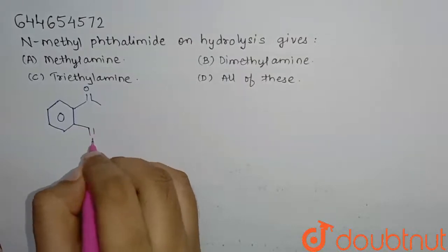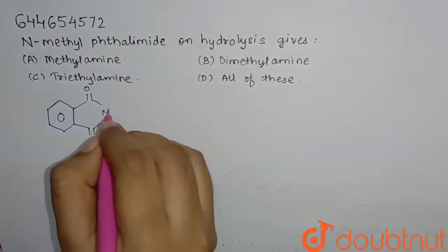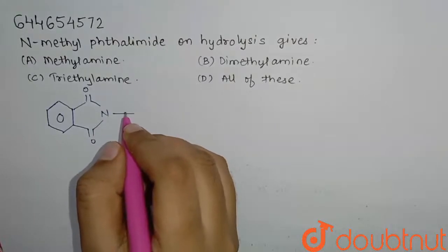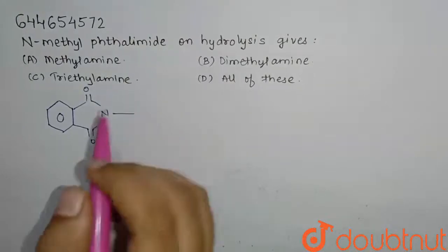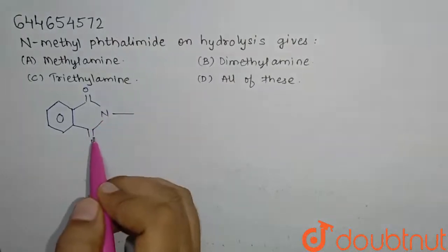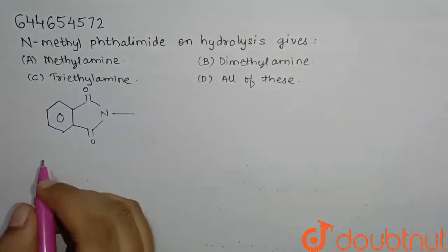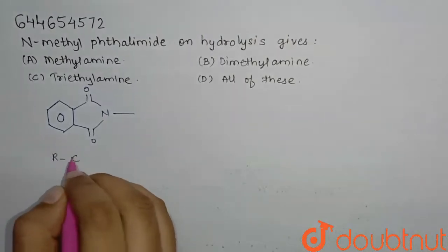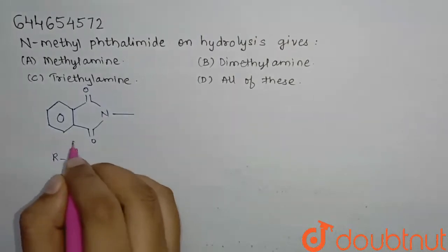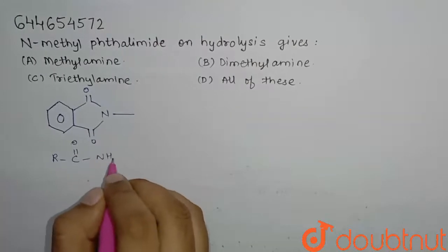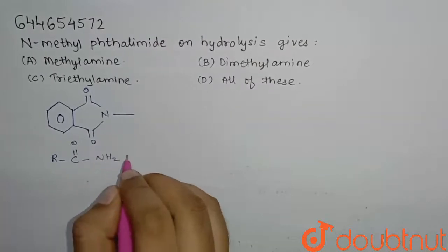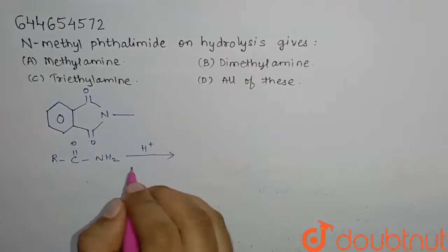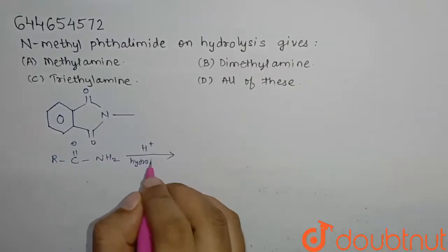This is the structure of N-methylthylamide, with a methyl group CH3. Here they are asking for hydrolysis. So if we see the general reaction, that is R-C double bond O and NH2, when this molecule undergoes hydrolysis with H+ added.